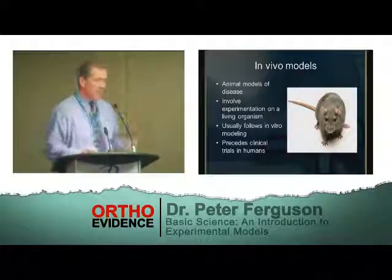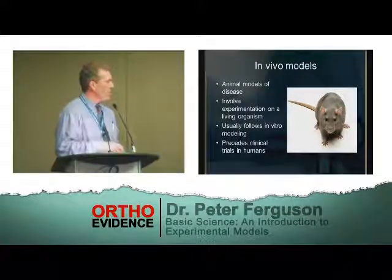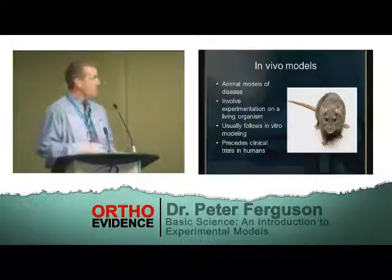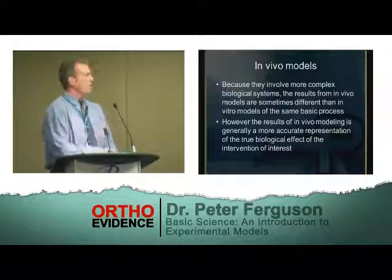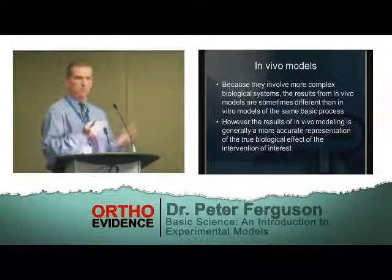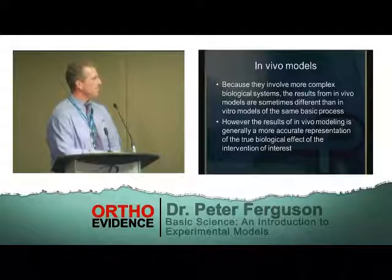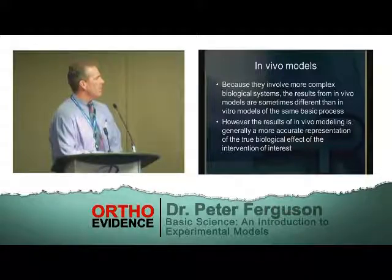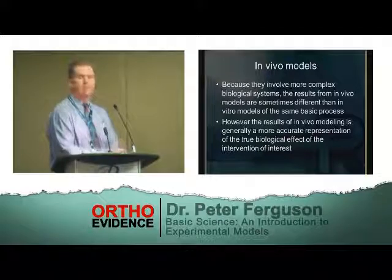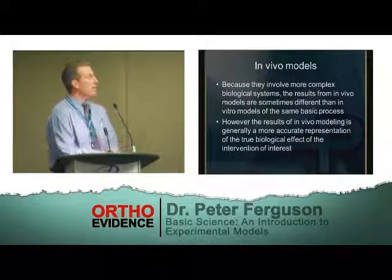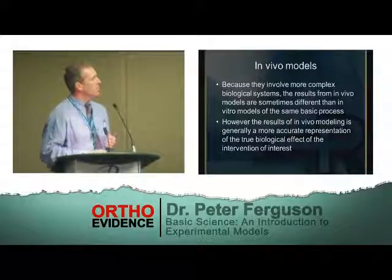In vivo models would obviously be the next step. Once you've found relevant findings in your in vitro work, you would go to in vivo work before going to a clinical trial in humans. These are animal models of disease — experimentation on a whole living organism. Because they involve much more complex biological systems, you may be very disappointed: something very promising in vitro may not work at all in an animal model. Don't dismay — that happens all the time. The important thing is that results in vivo are often a more accurate representation of what really happens in a biological system. A positive result in an in vivo model puts you very much on the right track toward a clinical trial and potentially human intervention.